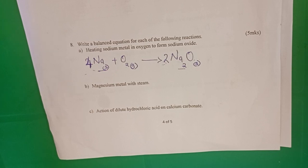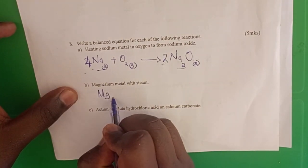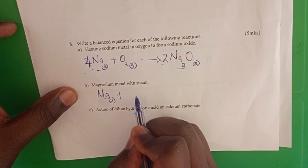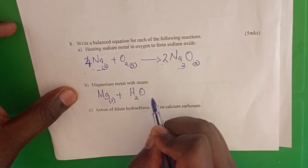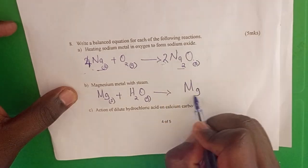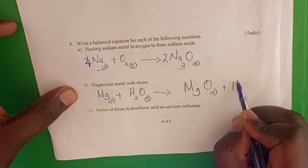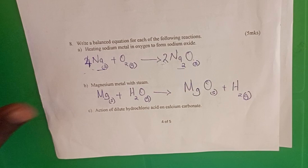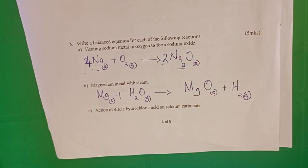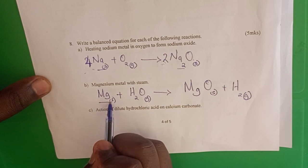Next reaction: magnesium reacting with steam. Magnesium solid reacts with steam, which is a gas, to form magnesium oxide plus hydrogen gas.